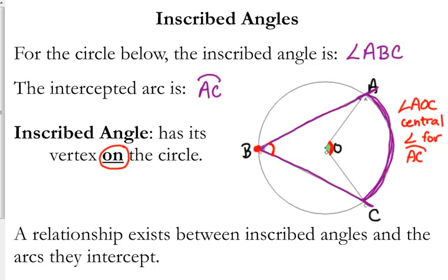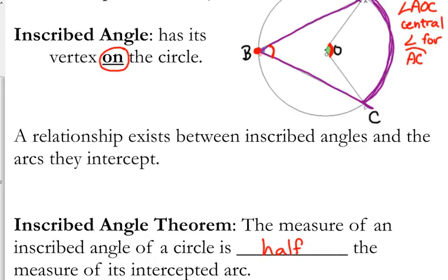Smaller, okay? Inscribed angles are smaller than central angles, but there's actually a very specific relationship that exists. Central angles have the same measure as the intercepted arc. Inscribed angles are half the measure of the intercepted arc.